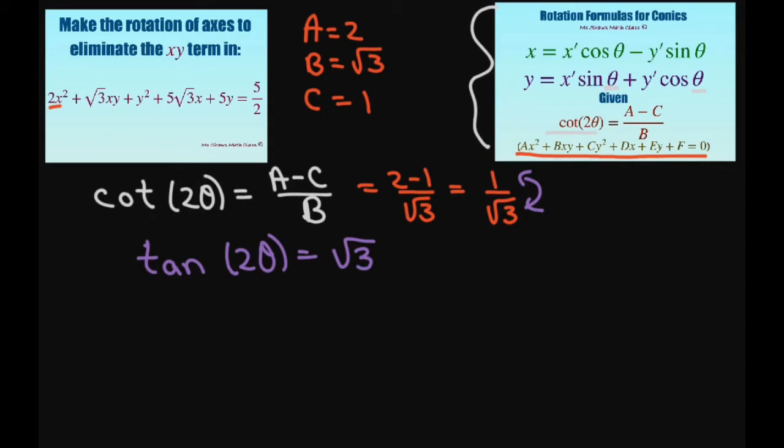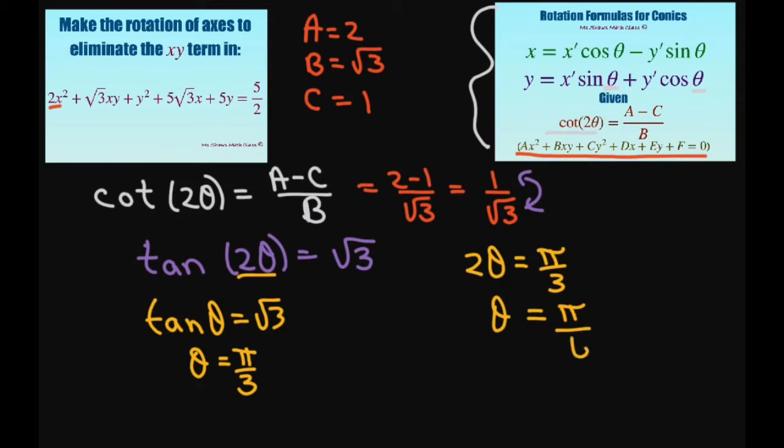Now if we just did tan of theta equals square root of 3, then my angle would be pi divided by 3. But we have 2 theta, so we're going to set 2 theta equals pi divided by 3, and divide both sides by 2, and we get pi divided by 6. So that's what we're going to use for our formulas.